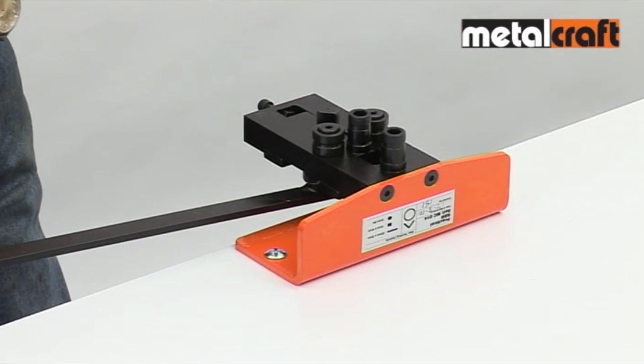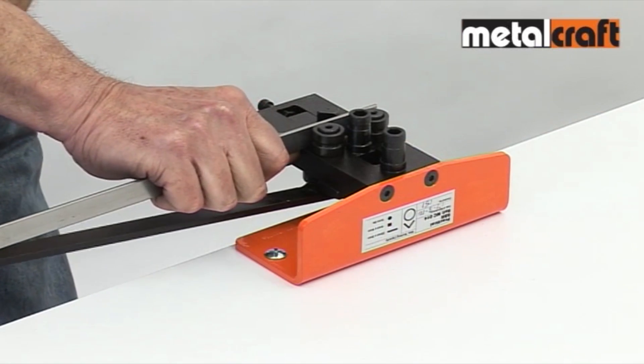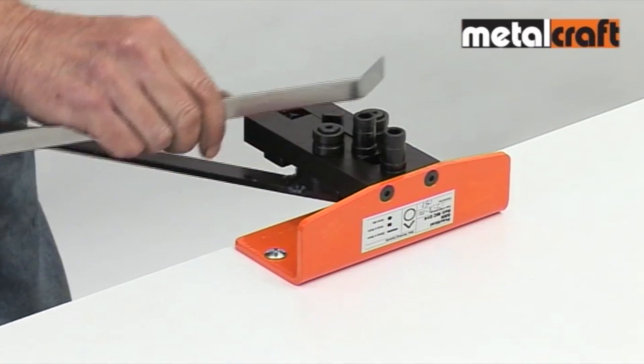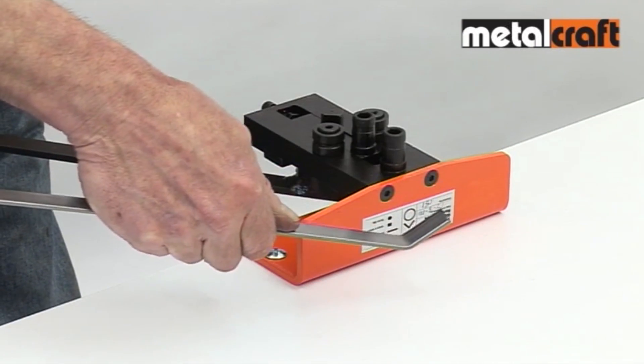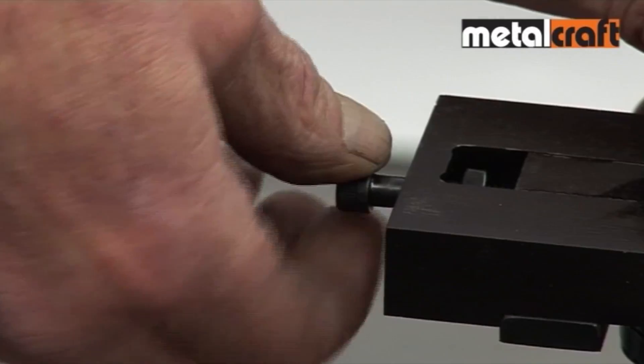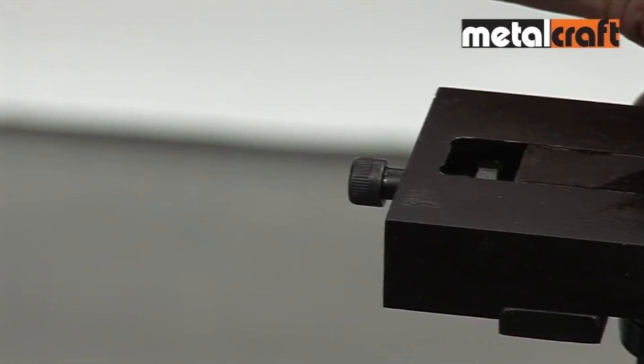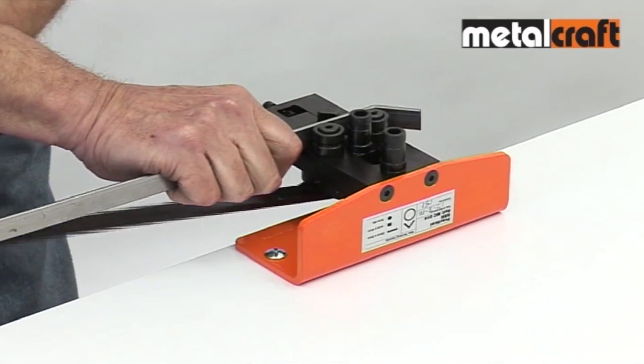Another handy feature on the bending function is the ability to set and then repeat a particular angle of bend. First you make your initial bend, then use the end stop screw to fix its angle. And now you can go on to make identical bends each time.